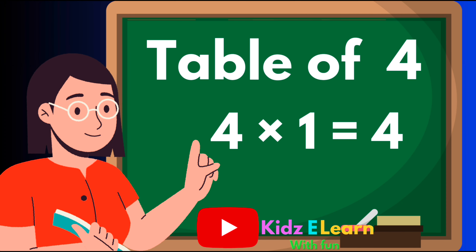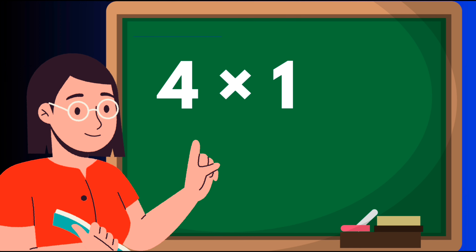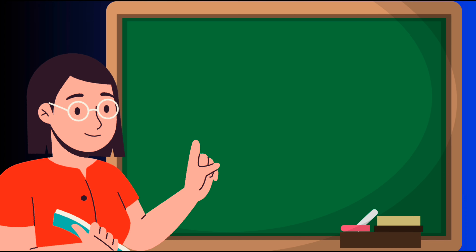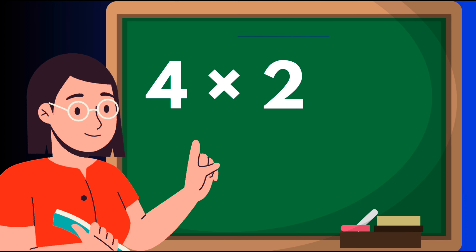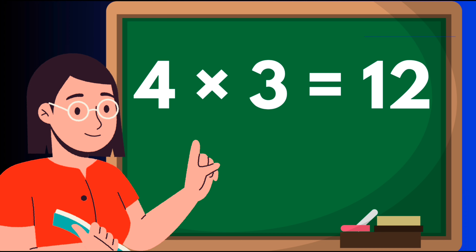Hello friends, today we are going to learn about the four table. Four ones are four, four twos are eight, four threes are twelve.